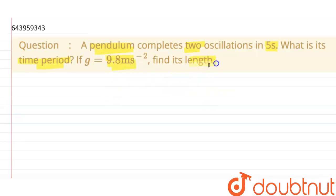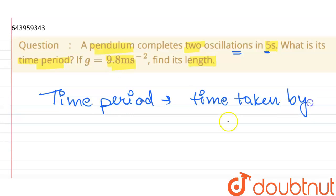All right, so it completes two oscillations in five seconds. So what is time period? Time period is time taken by one oscillation.